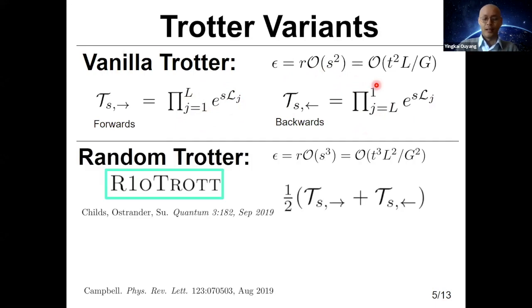It was recognized recently by Childs, Ostrander and Su that if one introduces a stochastic map, instead of doing forwards or backwards alone, one can do this trotterization forwards and backwards each with probability half. The advantage of doing this is that this simulation error can be very much improved. It can be brought down from order s squared to order s cubed, which is a huge improvement when s is small. This translates to a simulation error that scales as order L squared, where L is the number of terms.